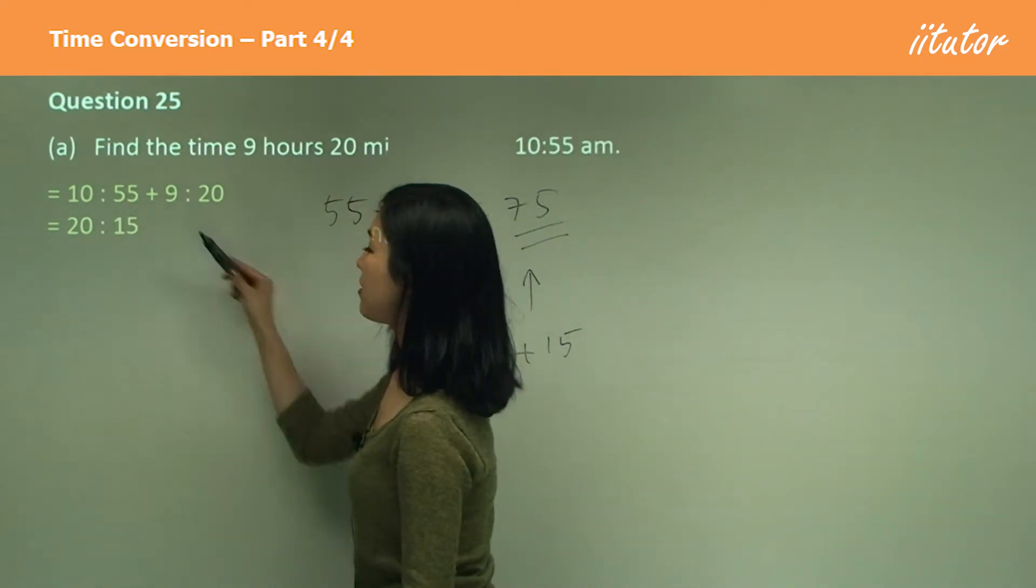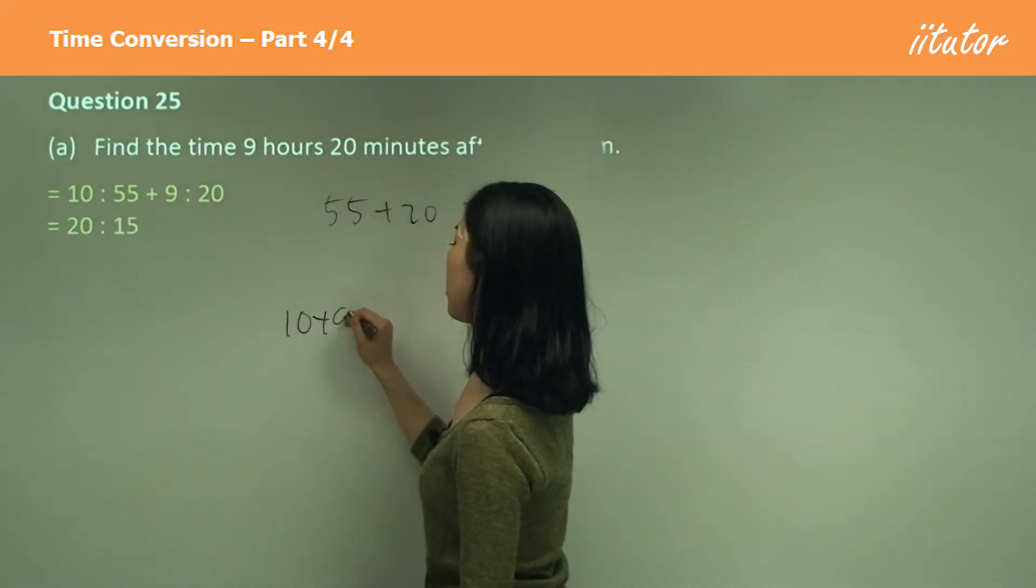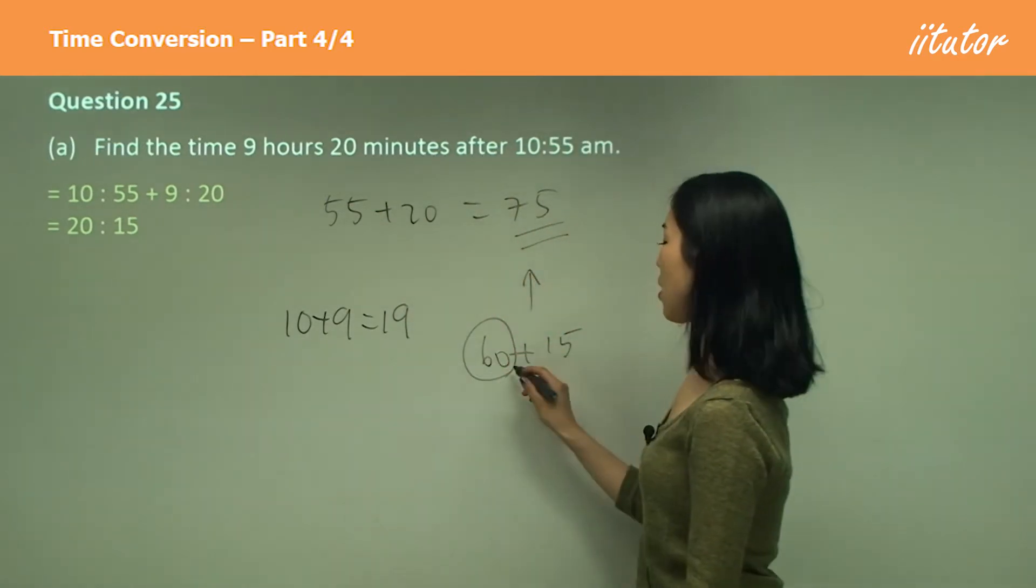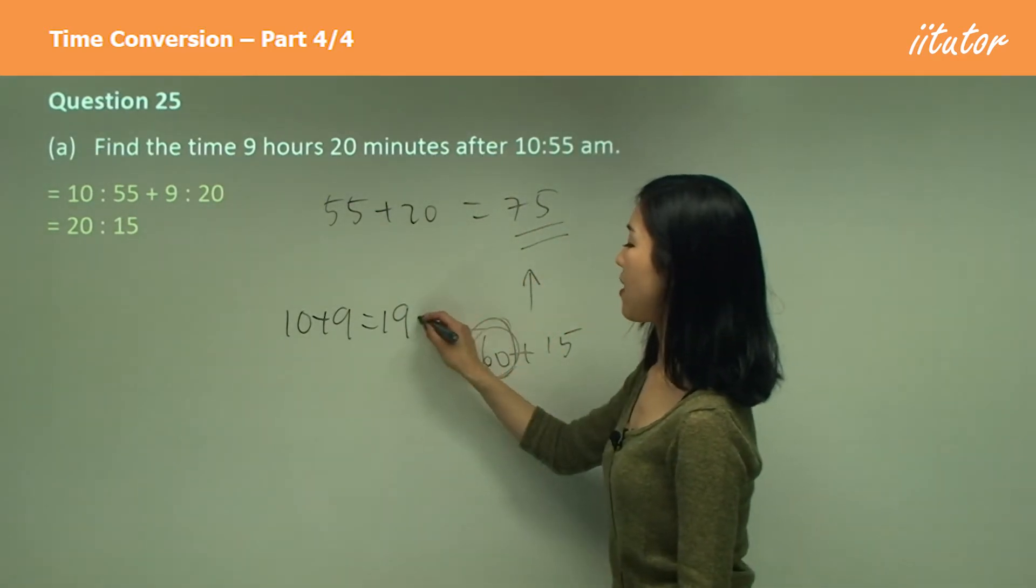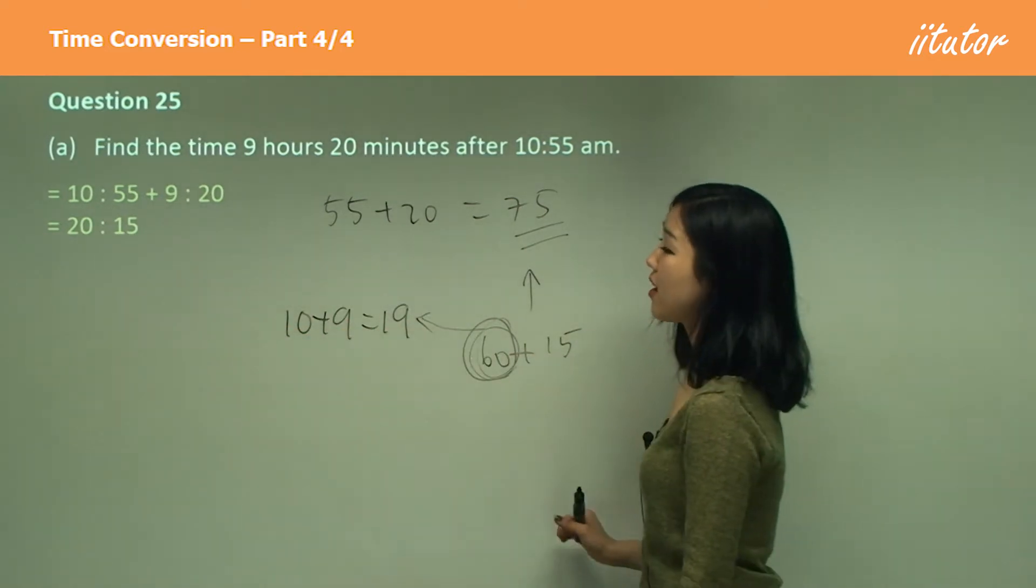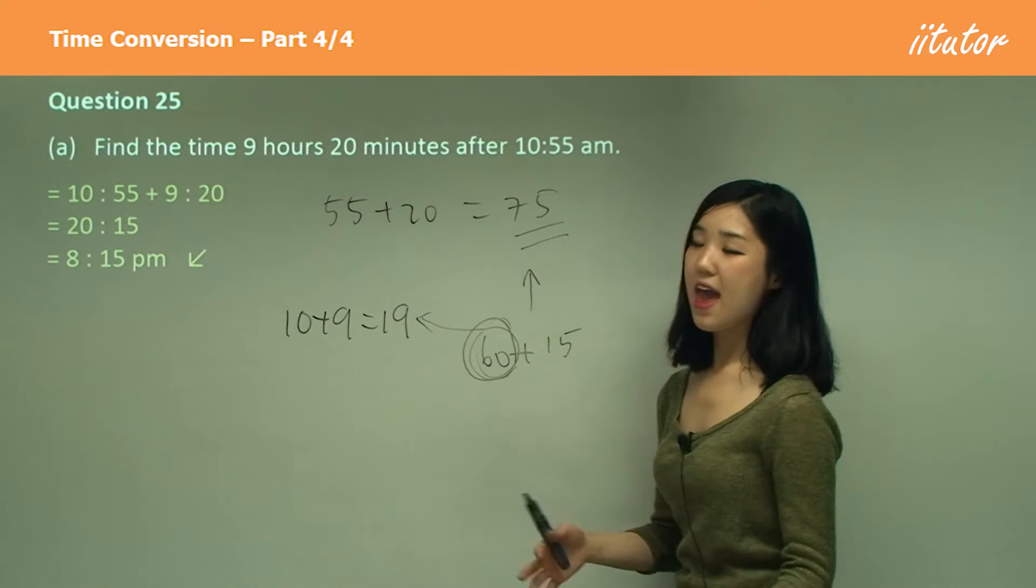So see how 10 plus 9 is 19. So 19 hours. But we'll see how we've got an extra hour here. So we add that onto here, which gives you 20 and 15 minutes. And that is 8:15 p.m.